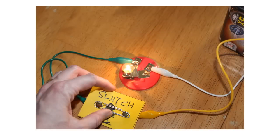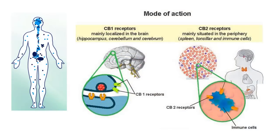You can think of these receptors as equivalent to a light switch in a circuit diagram. Your body has two types of receptors specialized for endocannabinoids: we call them CB1 and CB2. CB1 is on the surface of nerve cells in the brain. CB2 is found mostly on white blood cells, but also in the heart, lung, and blood vessels.